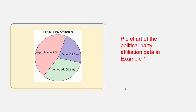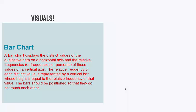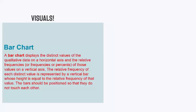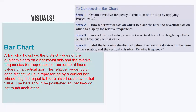Another way to display this is with a bar chart. A bar chart displays the distinct values of the qualitative data on the horizontal axis and the relative frequency on the vertical axis. The relative frequency of each distinct value is represented by a vertical bar whose height equals the relative frequency. Importantly, with bar charts the bars should be positioned so they do not touch each other, since Democrats, Republicans, and Other are all distinct categories.